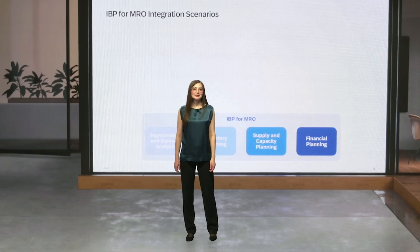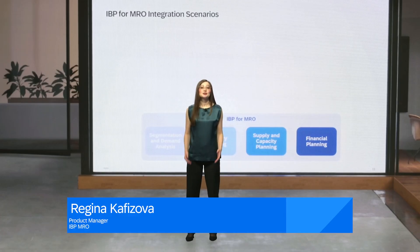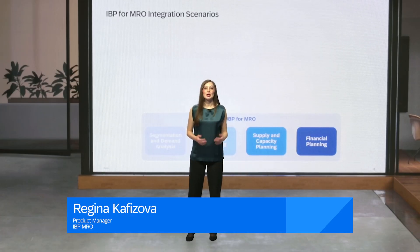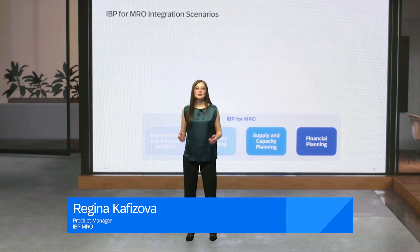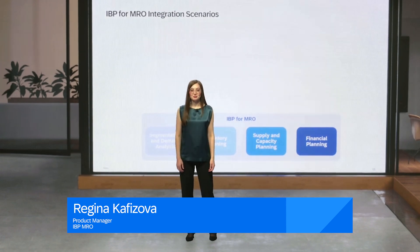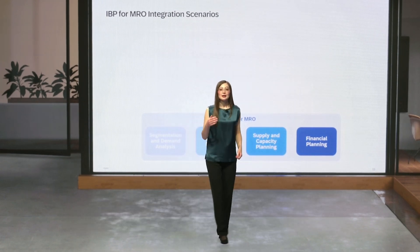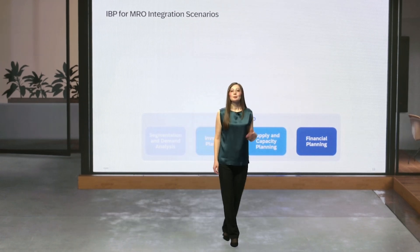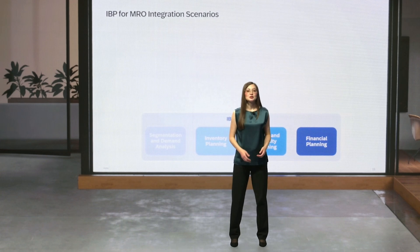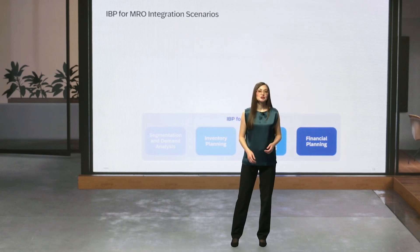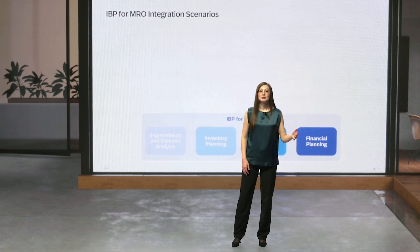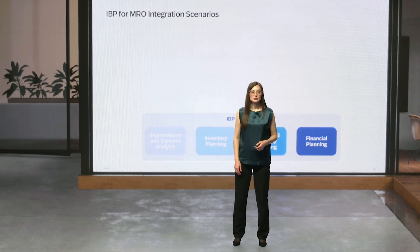In the world of maintenance, repair and operations, it is essential to align all planning and execution departments through a robust connection between your ERP, plant maintenance, project system and supply chain planning systems.